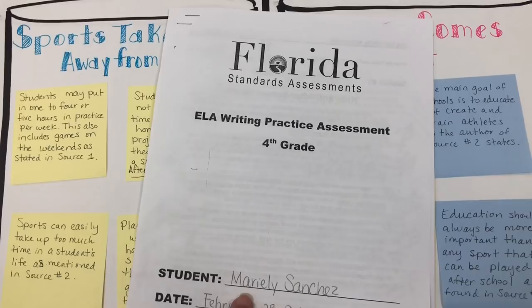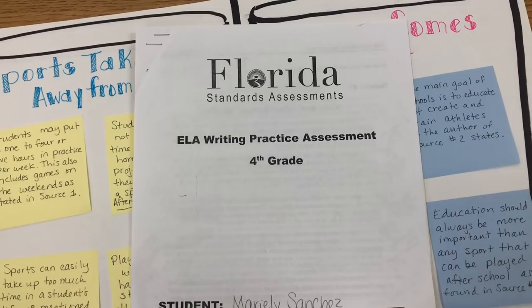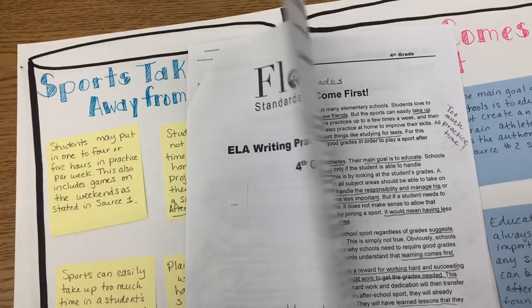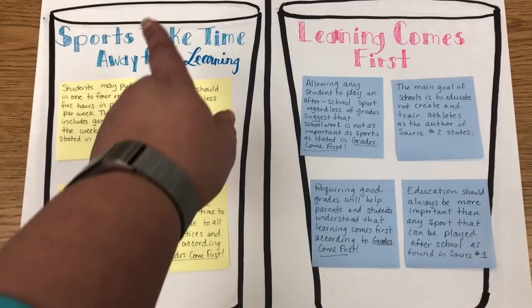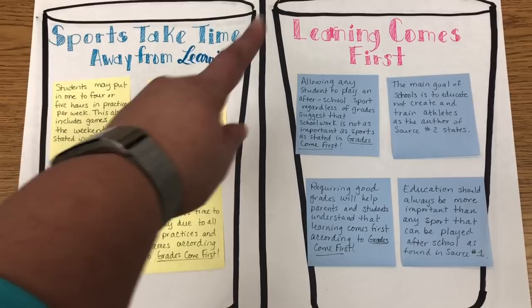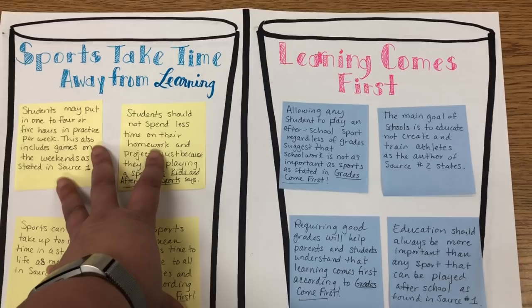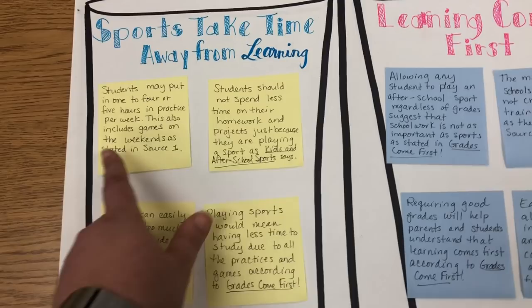So just to remind you, this is the kids-in-sports text set where it went over whether or not school should allow good grades for students to participate in after-school sports, and the students had to choose their opinion and write about it. This is what we did last week, and the students wrote an essay about it on Friday. This is the bucketing activity — I had already created these posters for them, drew the buckets so they could easily title their buckets with the reason to support their opinion. This one supports 'grades before sports,' and two of my reasons are 'sports take time away from learning' and 'learning comes first.'